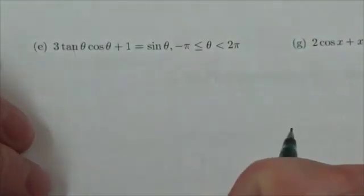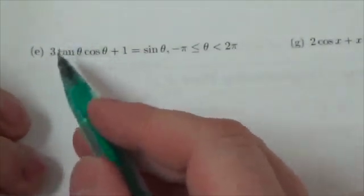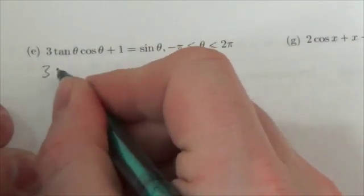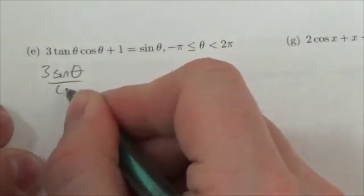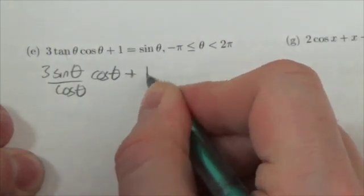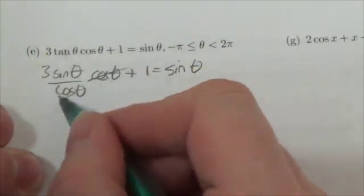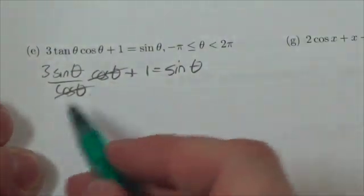So I've got to think a little bit, I've got to be a little bit more clever with this and think back to my definitions and realize, hey, tangent is sine of theta over the cosine of theta. And that was being multiplied by the cosine of theta plus one equals the sine of theta. So what that means is those two cosine terms can divide out.